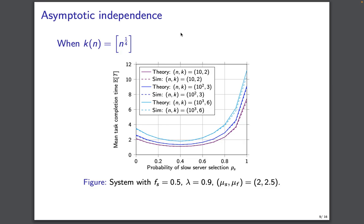In order to validate asymptotic independence, we ran numerical studies as well as empirical simulations. In this plot we have plotted the mean task completion time on the y-axis and the slow server selection probability on the x-axis.